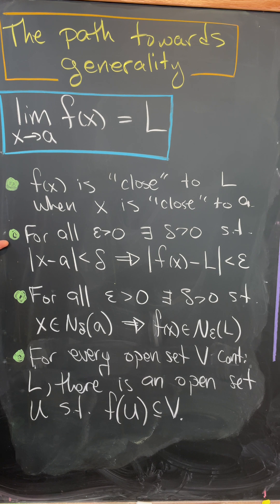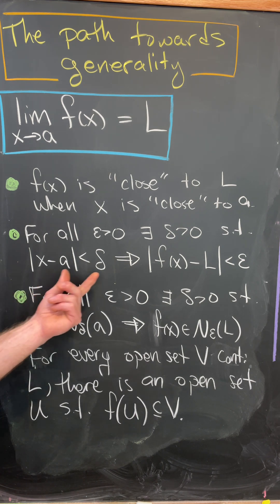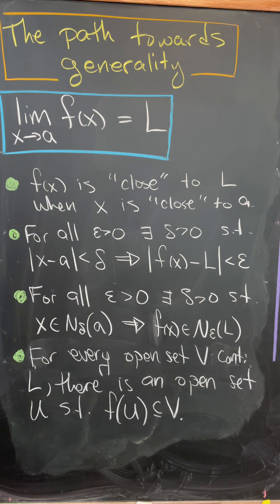Then you would have this second step, which is like from a real analysis class. For all epsilon bigger than zero, there is a delta bigger than zero, such that if x minus a is less than delta, then f(x) minus L is less than epsilon.